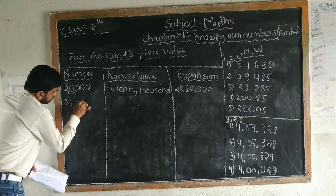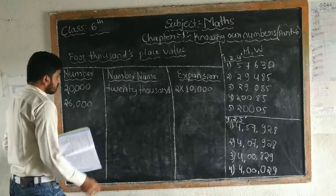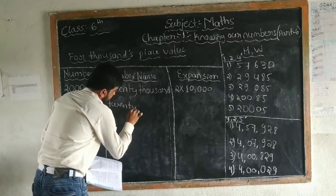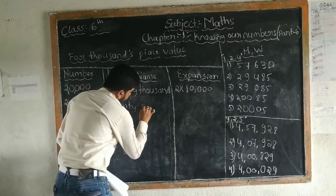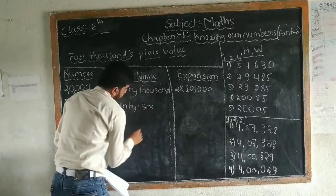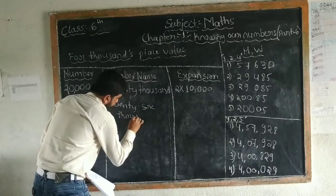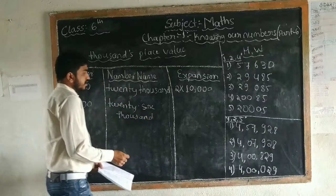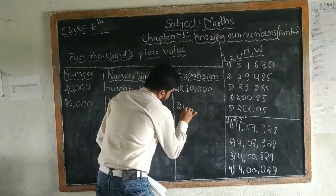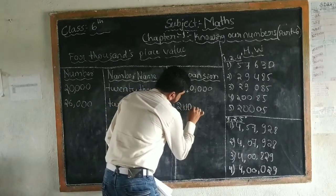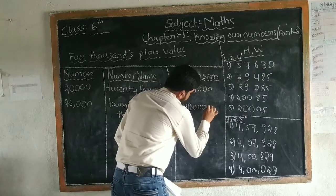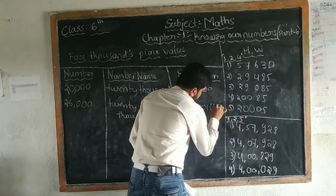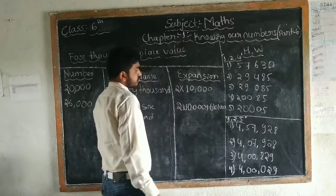Next one is 26,000. Twenty-six thousand. Okay, we expand this one: 2 into 10,000, plus 6 into 1,000.